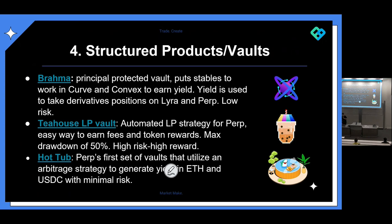Hot Tub is upcoming, while the other two vaults are available today. At Perp we're also researching other vaults — Hot Tub is non-directional so it doesn't matter which way the market goes, you can still earn a return. We're also looking at directional vaults — maybe a bullish or bearish Ethereum vault. The goal is to really open up and democratize on-chain strategies and make these more accessible to people.